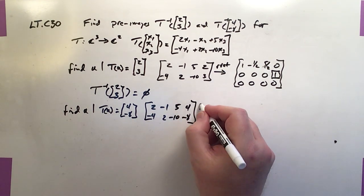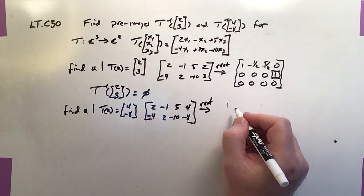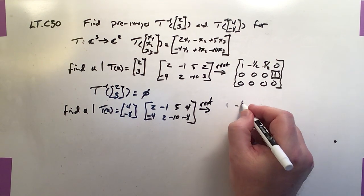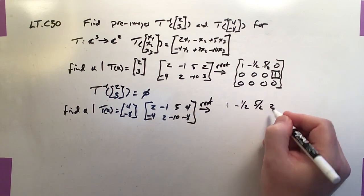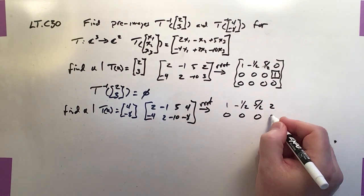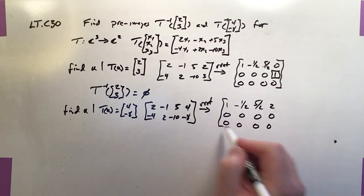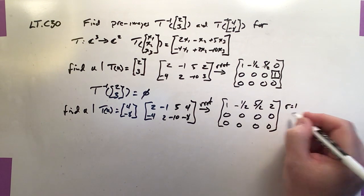I'll actually add two rows of zeros. So the REF for this guy is better news. It's [1, -1/2, 5/2, 2], and then the rest are all zeros. And so if we analyze this REF, we'll see that r equals 1, n equals 3.